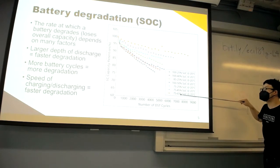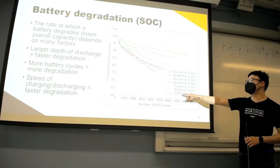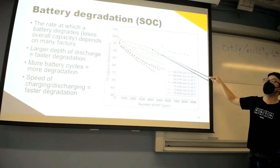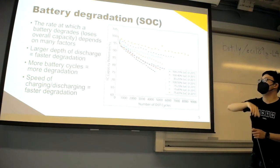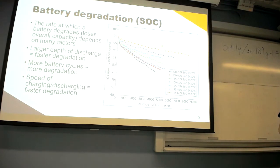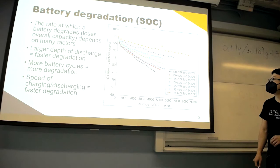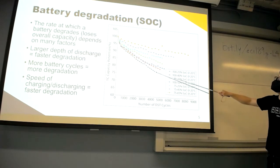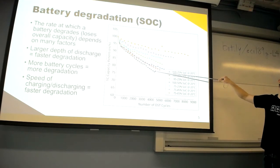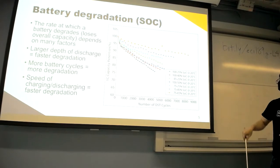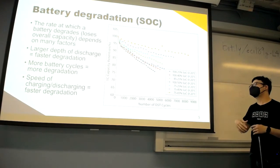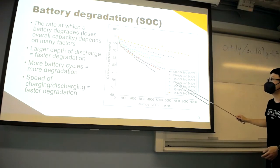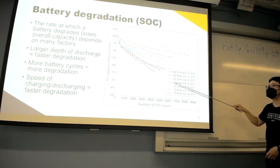Degradation means how much of your original capacity you're retaining. Over time, as you use the battery more, its overall effective capacity decreases. For cycles going down to 75% state of charge, the capacity retention drops below 80% after about 4,000 cycles, whereas for a 75% to 65% discharge — only a 10% swing — capacity stays close to 95% of the original after the same number of cycles.